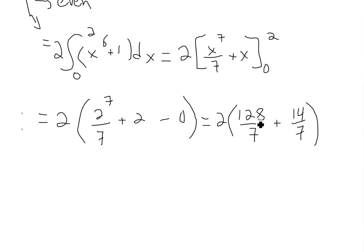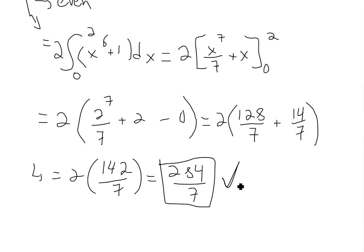So we have this part. Now we can add these up. This will just be 128 plus 14, that is 142. So we get equals to 2 times 142 divided by 7 and multiply by the 2. This will just be equals to 284 over 7. You could plug into the calculator and you'll get this same answer. So there's our answer for that one.